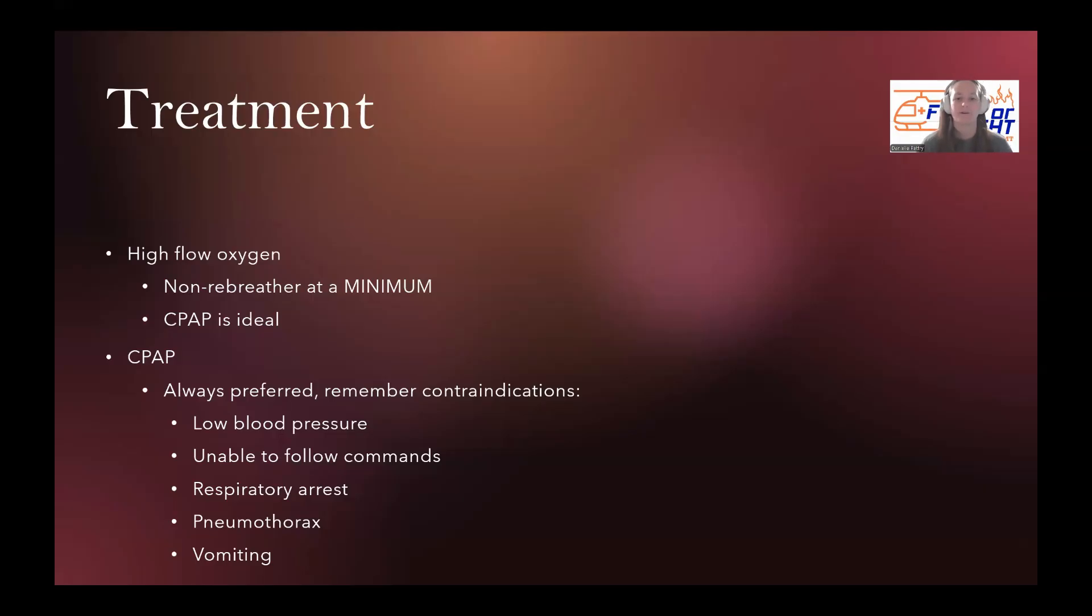We cannot use CPAP if they have low blood pressure because that built up pressure in the chest is going to lower the blood pressure even further as that extra pressure pushes on the heart. We can't use CPAP if they're unable to follow commands. They have to be able to actively exhale against CPAP. If they're in respiratory arrest, if they're not breathing on their own, we cannot use CPAP because they have to be able to exhale against it. If they have a pneumothorax, so it could be major chest trauma or if you're hearing diminished lung sounds that make you think they have a pneumothorax. Remember, if they have a pneumothorax, that's a hole in their lung, and if we give them CPAP, the air is going to leak out of that hole very fast and go out into their chest and their thoracic cavity and start to push on their heart and their other lung. So we cannot use CPAP if they have a pneumothorax. And lastly, if they have active vomiting or gastrointestinal bleeding that we think might lead to vomiting, we cannot use CPAP because if they vomit with the CPAP on, it's going to push that vomit right back down into their lungs and they're going to aspirate on it.